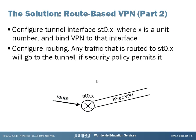How exactly do we configure route-based IPsec VPN? We first configure Phase 1 and Phase 2 of IPsec VPN. We also configure a tunnel interface, which is the st0.x interface — where X is a unit number such as 0, 1, 2, etc. — and we bind the IPsec VPN to the tunnel interface. Any traffic routed to the tunnel interface through static or dynamic routing goes to this IPsec VPN, if security policy permits it.